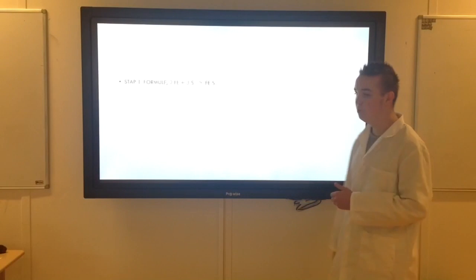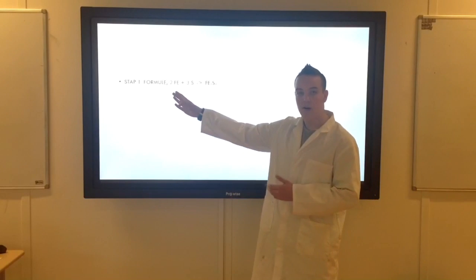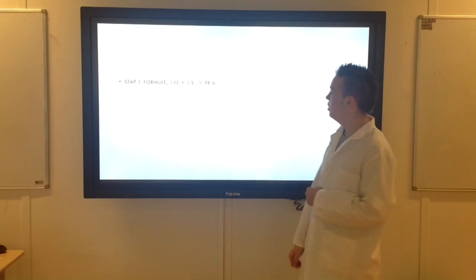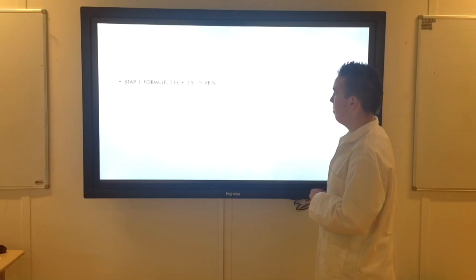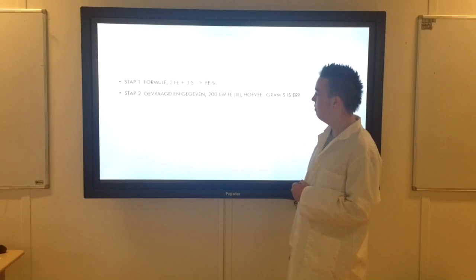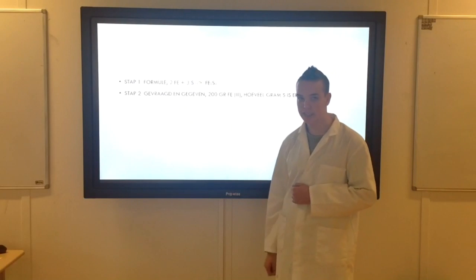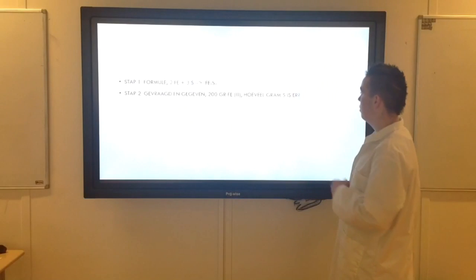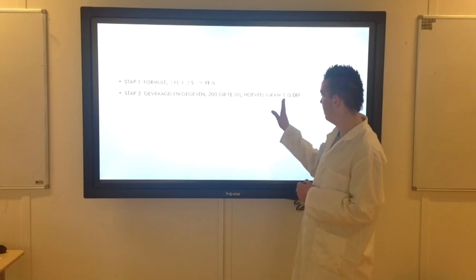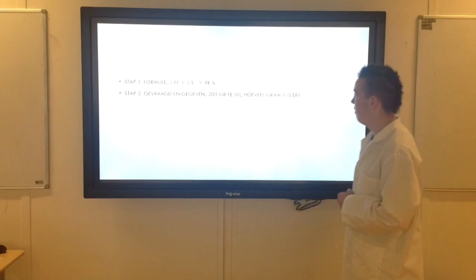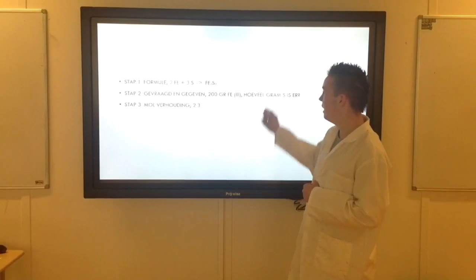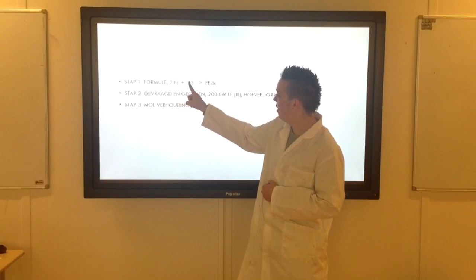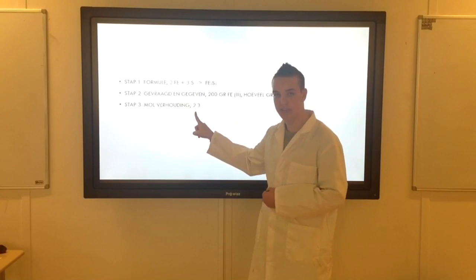Dan gaan we kijken wat we moeten doen. De eerste stap is de formule. Ik heb hem al even kloppend gemaakt. 2Fe + 3S wordt Fe2S3. Stap 2. Dan kijken we wat is er gevraagd en wat is er gegeven. We weten dat er 200 gram ijzer is. En we willen weten hoeveel gram zwavel er is. Daar staat de S voor. S staat voor zwavel. Dan gaan we even kijken naar stap 3. We gaan kijken tussen ijzer en zwavel. Voor ijzer staat een 2. Voor zwavel staat een 3. Molverhouding 2 staat op 3.